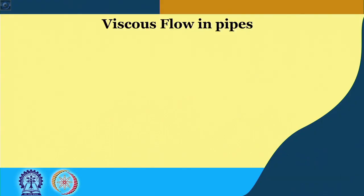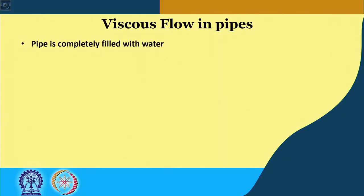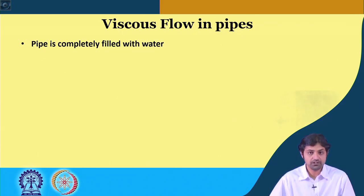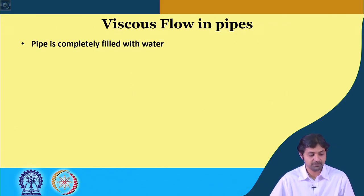To get started, one of the important things you must know is that the flow in pipes is viscous in nature; therefore, we call it viscous flow in pipes. An important property of pipe flow is that the pipe is completely filled with water or any other fluid — it can be oil or anything — but the pipe should be completely filled with it.